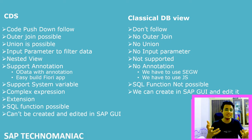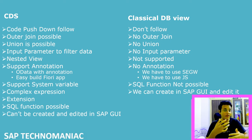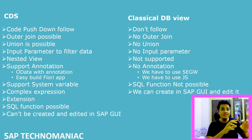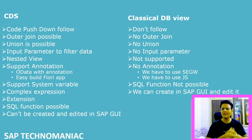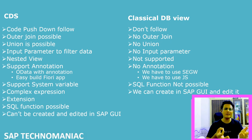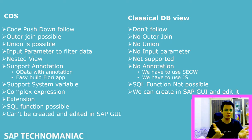Most importantly, CDS supports annotations — metadata information that is technology-specific. OData has its own annotations, Fiori has its own annotations; these are contained in the CDS and interpreted per technology. CDS also supports system variables, complex expressions, extension of standard CDS views, and SQL functions. One key point: you cannot create CDS views using SAP GUI — you must install Eclipse or SAP HANA Studio.